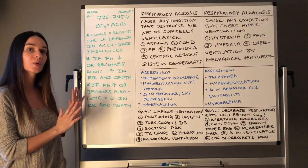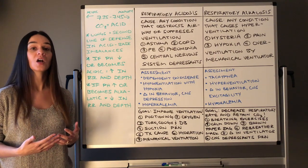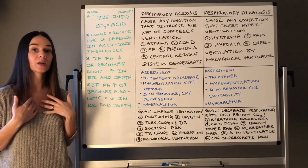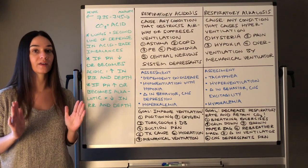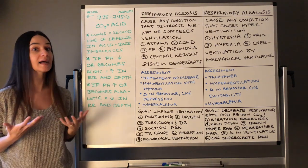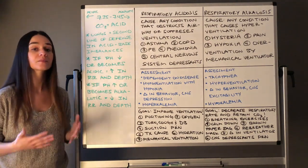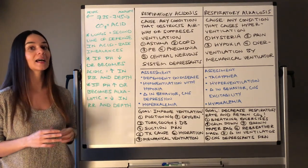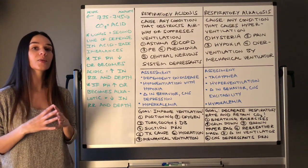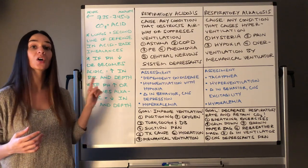On the left side of my board, I've put the key things you need to understand about how the lungs help us in acid-base imbalances. Remember, we have three systems that kick in when we are not in homeostasis. With our pH, we want it to be between 7.35 and 7.45. The lungs are the second line of defense, and the primary ion the lungs control in acid-base imbalances is CO2 — carbon dioxide.